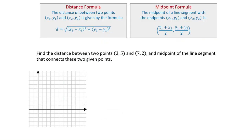Distance formula. The distance d between two points (x1, y1) and (x2, y2) is given by the formula: d equals the square root of (x2 minus x1) squared plus (y2 minus y1) squared.